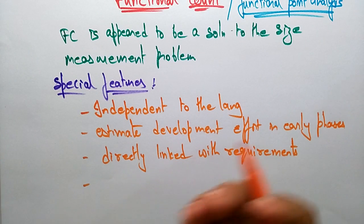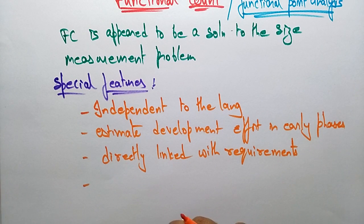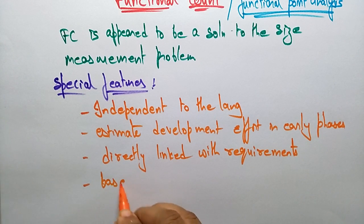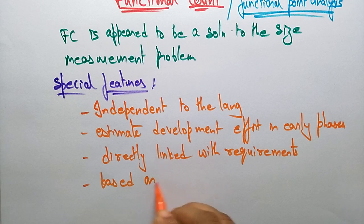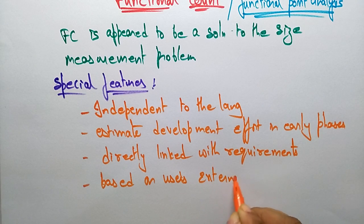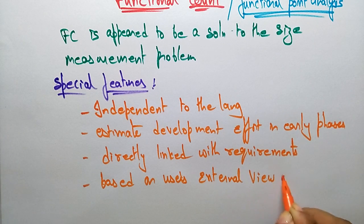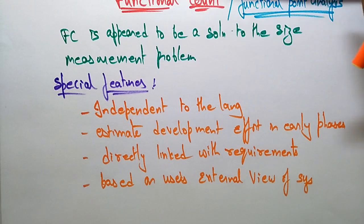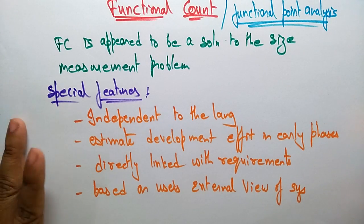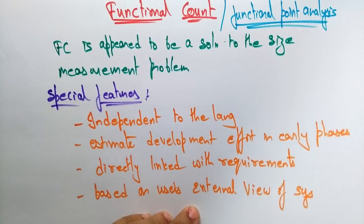It is directly linked with the requirements. So this functional count and functional point analysis is directly linked with the requirements, so we can easily calculate the functional point analysis if we know all the related function information. The functional point analysis is also based on the user's external view of the system.